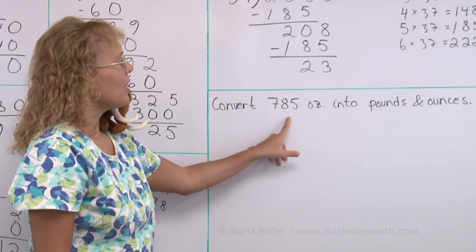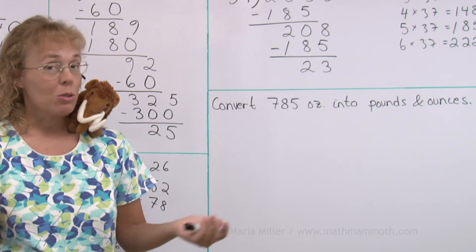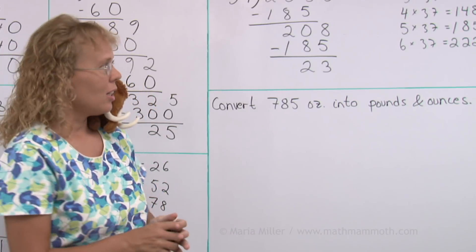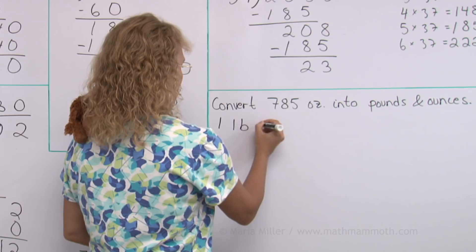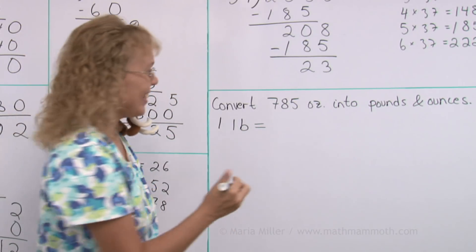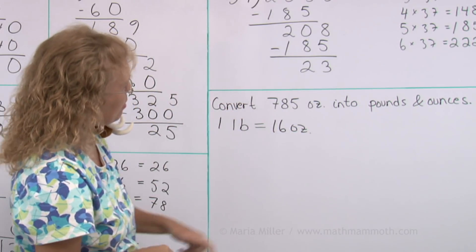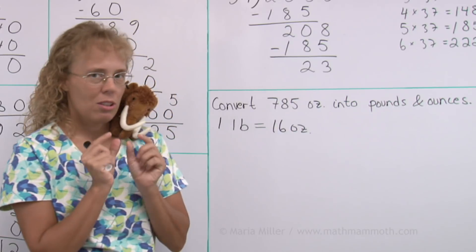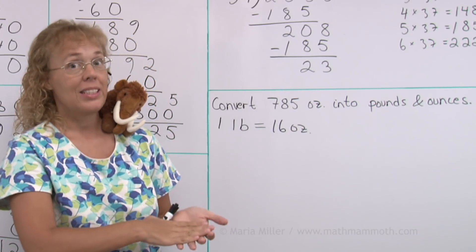Convert 785 ounces into pounds and ounces. Do you remember anything about pounds and ounces? One pound equals how many ounces? You need to remember this. 16 ounces. Okay. And we have lots of ounces. Ounces are those little units. Now we are converting that into pounds and ounces.